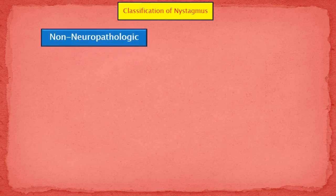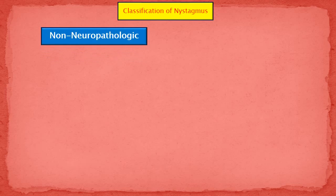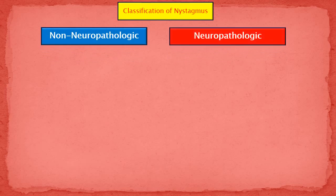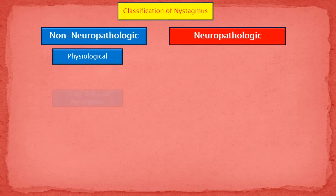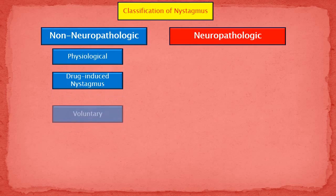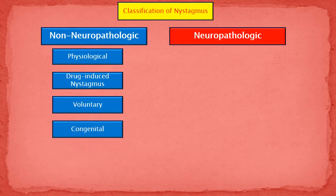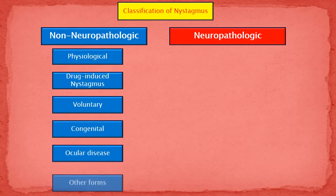The pragmatic classification of nystagmus includes non-neuropathologic nystagmus and neuropathologic nystagmus. The non-neuropathologic nystagmus includes physiological nystagmus, drug-induced nystagmus, voluntary nystagmus, congenital nystagmus, nystagmus due to ocular disease, and some other forms of nystagmus.